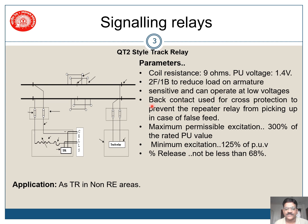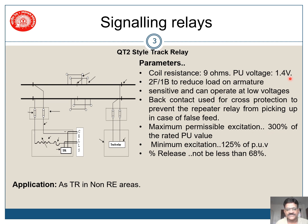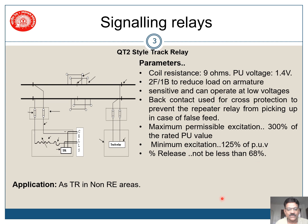Back contacts are used for cross protection to prevent the repeater relay from picking up in case of false feed — this is for failsafe operation. The maximum excitation permitted is 300 percent of the rated pickup value, which is 1.4 volts. The minimum excitation is 125 percent of the rated pickup value. The drop-away percentage shall not be less than 68 percent. This relay is to be used only as a track relay in non-RE areas.